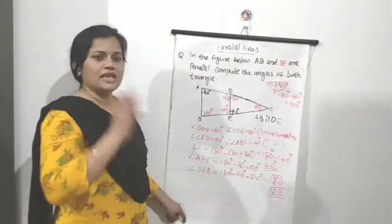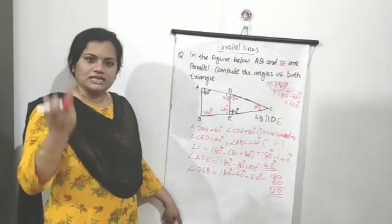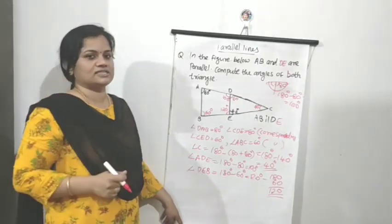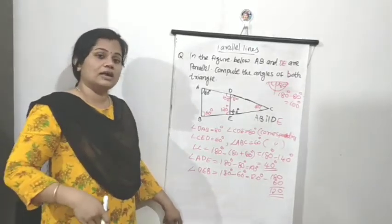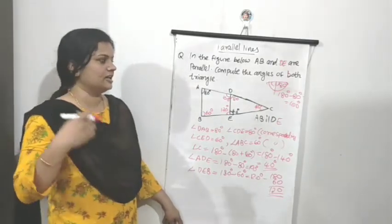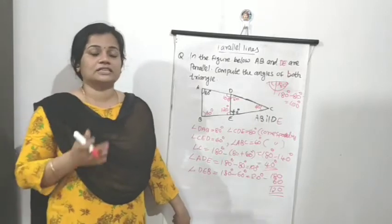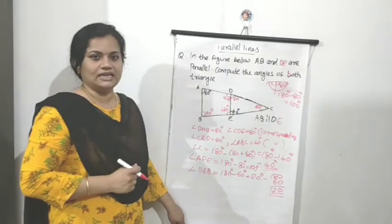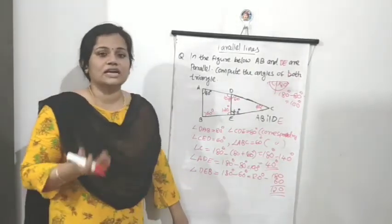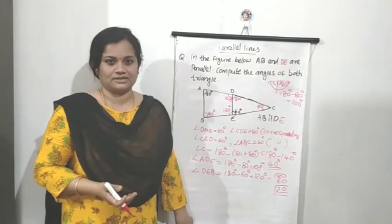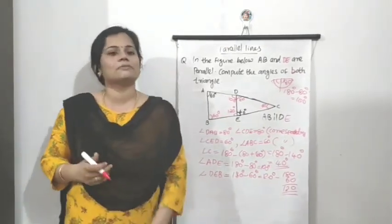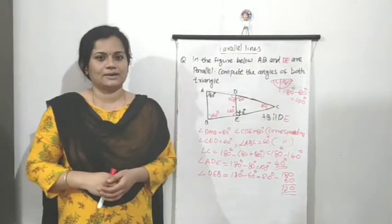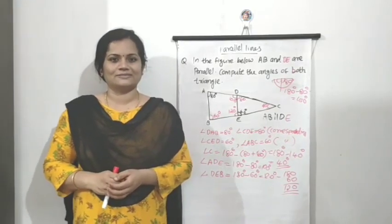The basis for all these problems is understanding corresponding angles, alternate angles, co-interior, and co-exterior angles. Also, linear pairs sum to 180 degrees, and the sum of angles in a triangle is 180 degrees. You should study all these angle types. If you have any doubt, discuss it during class time. Let us wind up the class now. See you later. Bye.